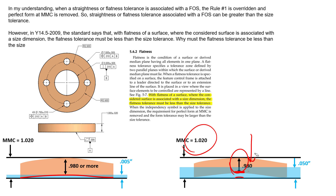For that reason, the statement in the standard stands: we have to have a flatness tolerance that is less than our size tolerance when flatness is applied to a surface. Hopefully that helps clarify things and opens our eyes to the idea of derived median plane flatness, and how flatness applied to a surface affects a feature of size.